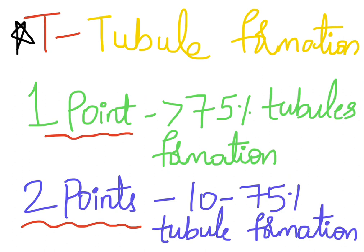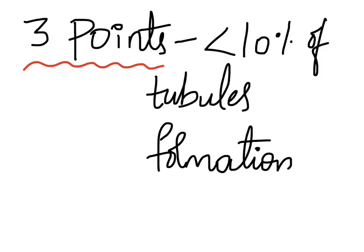First we discuss tubule formation. Depending upon the percentage of tubules present, it is categorized into three points: one point refers to more than 75% tubule formation, two points refers to 10 to 75% tubule formation, and three points refers to less than 10% tubule formation.